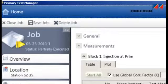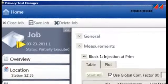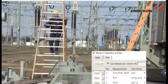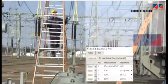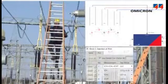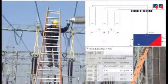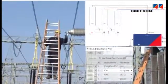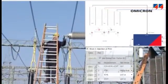Omicron's Primary Test Manager software makes this testing easy. It shows clear connection diagrams for the different test modes, thereby making test connections easier and helping to avoid connection errors.